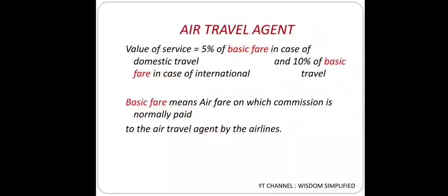Second case: Air Travel Agent. In this case, Value of Supply for services will be: 5% of basic fare in case of domestic travel, and 10% of basic fare in case of international travel. Basic fare means the airfare on which commission is normally paid to the air travel agent by the airline. So Value of Supply = 5% of basic fare for domestic, 10% of basic fare for international.